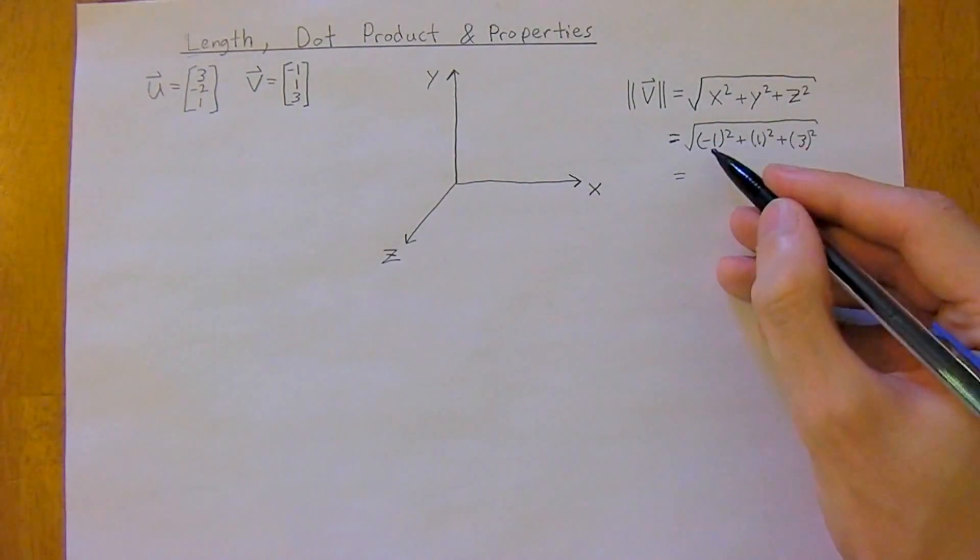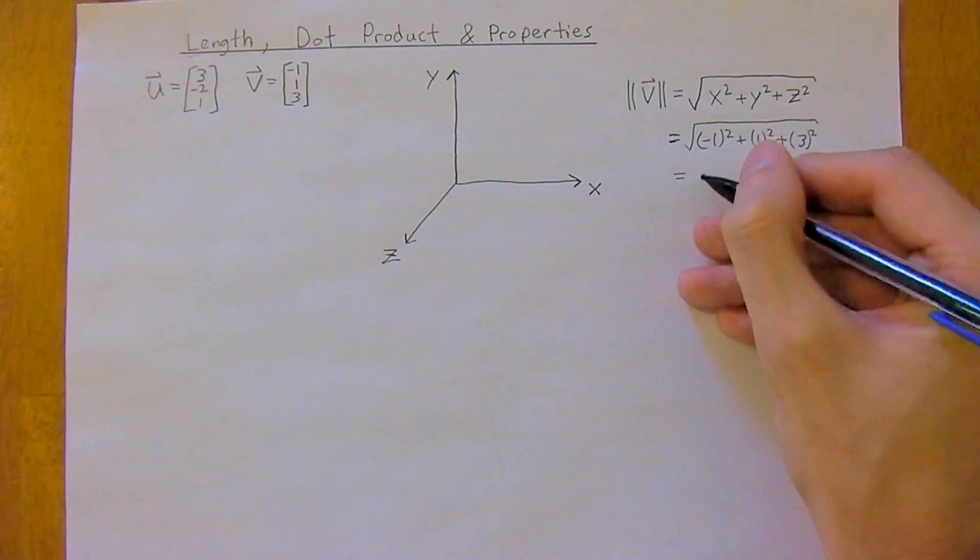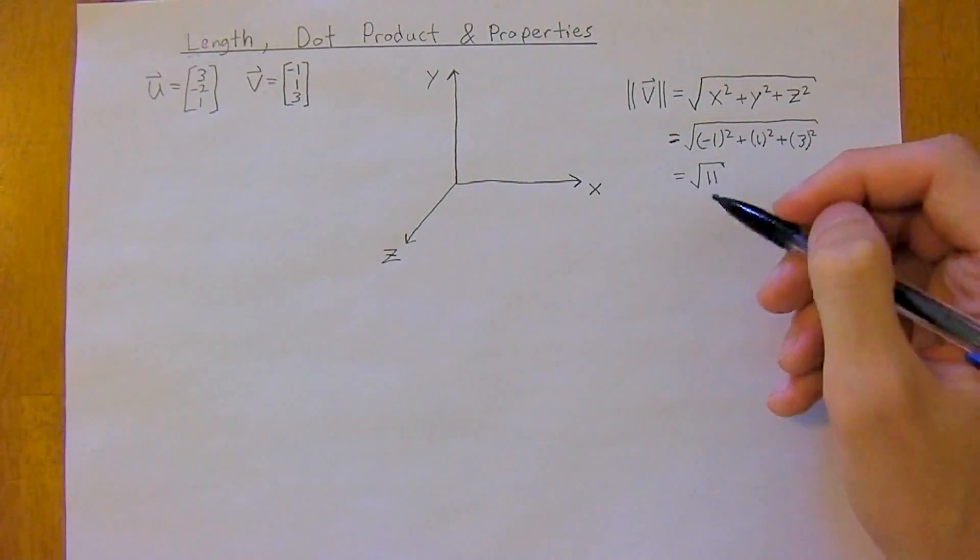which is just going to be 1, plus 1, plus 9. So it'll be the square root of 11. So that's going to be your magnitude.